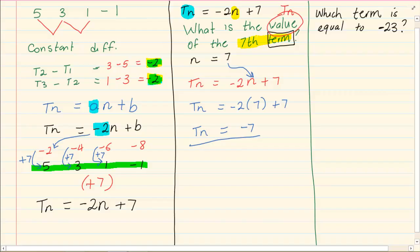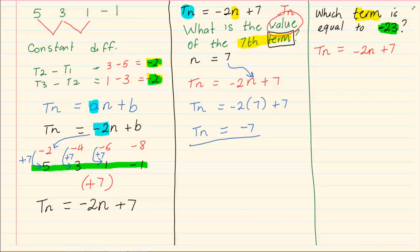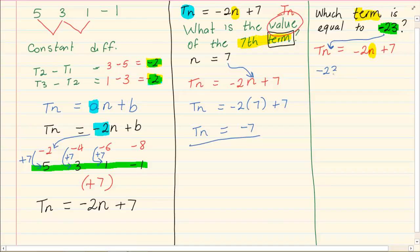They are saying which term is equal to minus 23. Now you need to understand what are they giving us. Are they giving us Tn or are they giving us N? Now we know the formula is Tn is equal to minus 2N plus 7. When they are asking you which term, then they are asking you to solve for N. What they had given you is Tn.